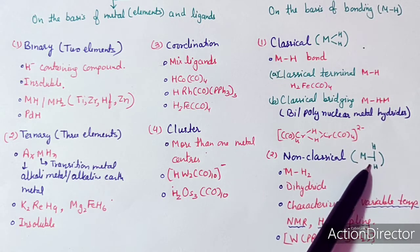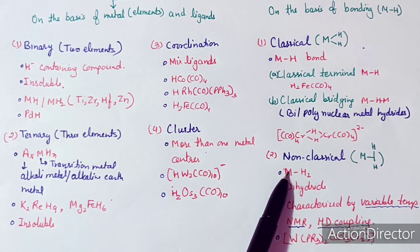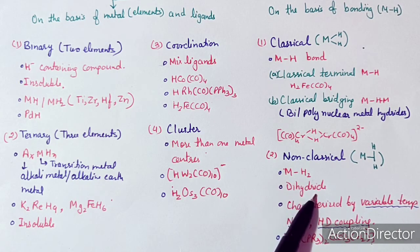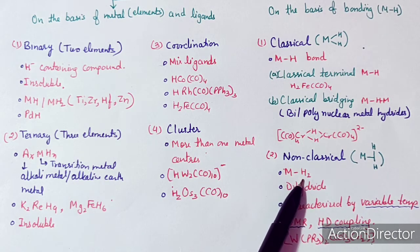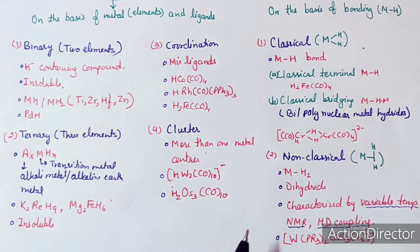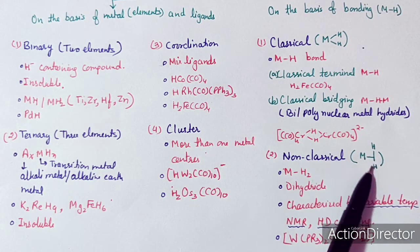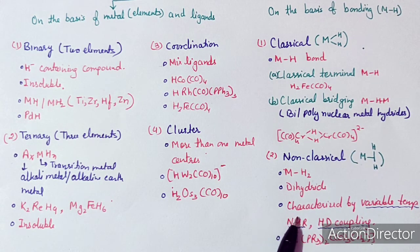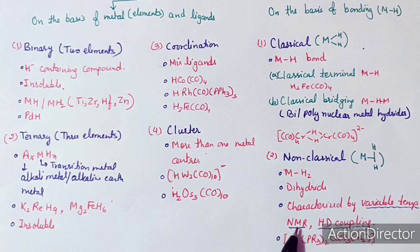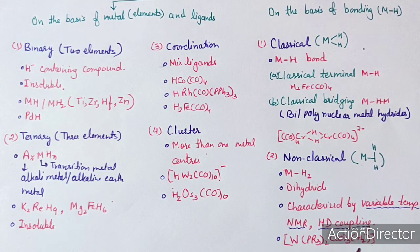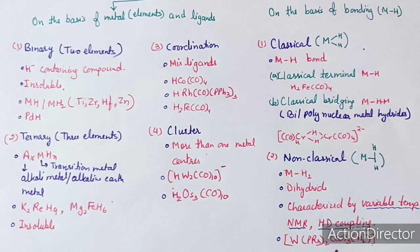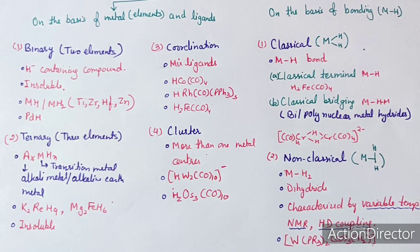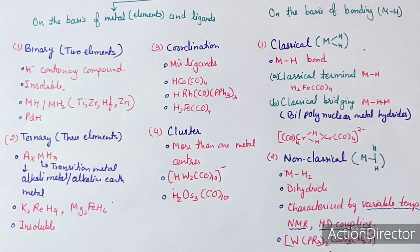In non-classical metal hydrides, the formula is written as M(H₂) type. H₂ is attached to the metal center like a pi-bonded ligand — similar to alkenes — where the sigma bond of hydrogen directly attaches to the metal center. They are always dihydrides, never monohydrides. They can be characterized by variable-temperature NMR and H–D coupling.